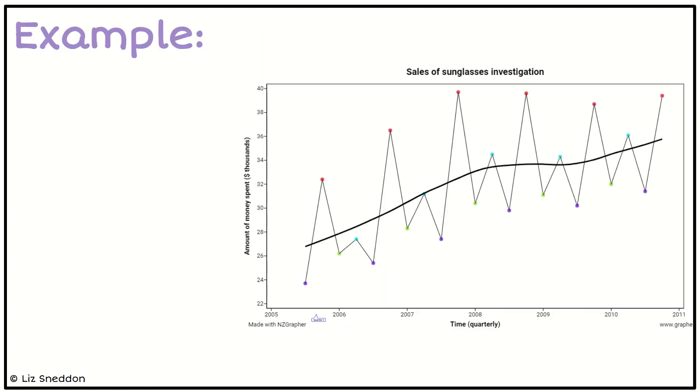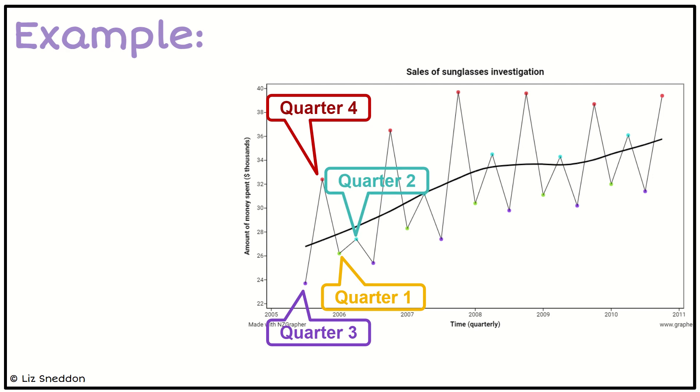Then I've got the red dots are quarter four. Following that, the yellow dots, or green dots, are quarter one. And then the blue dots are quarter two.